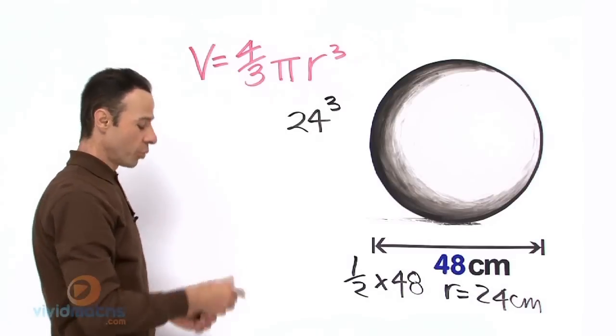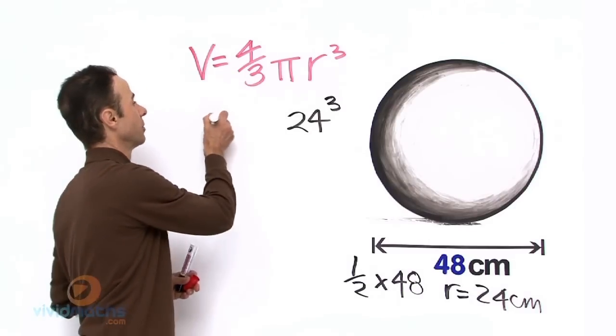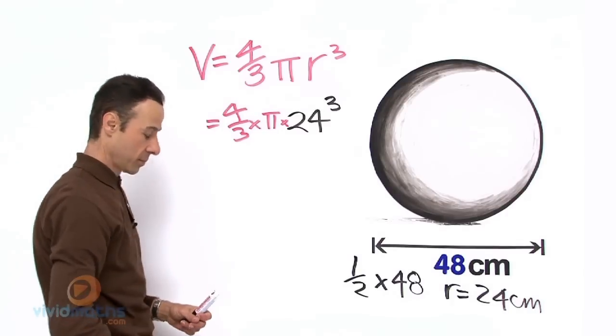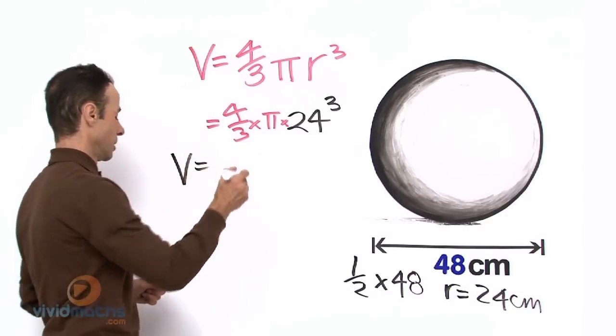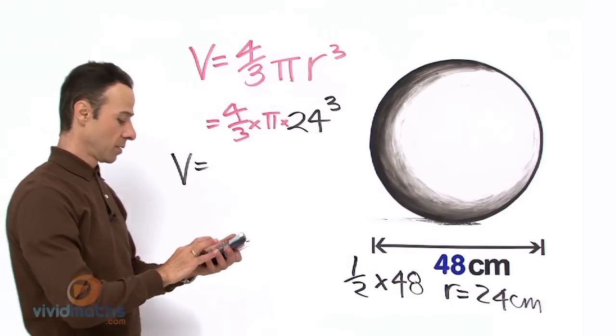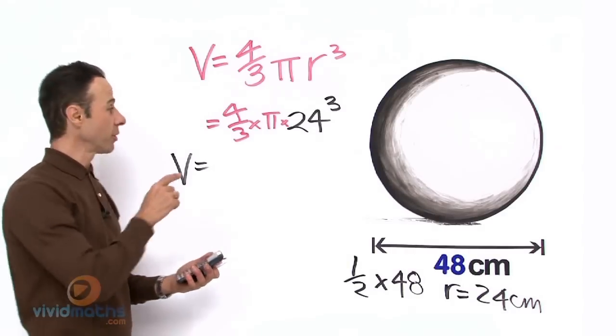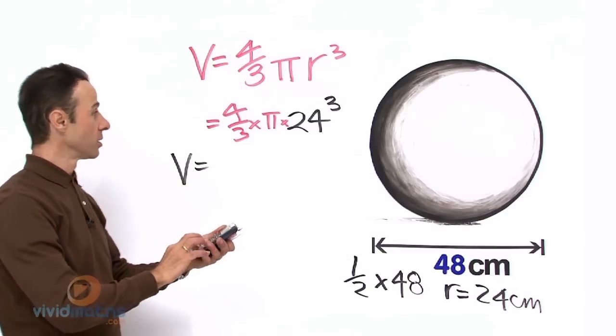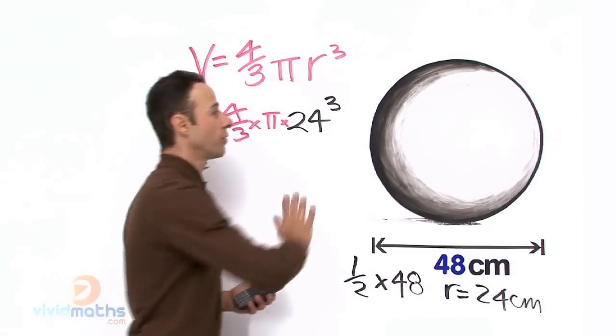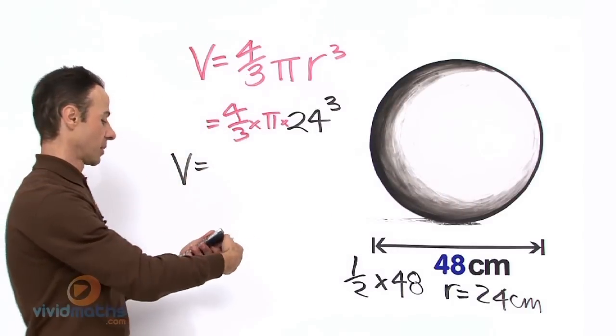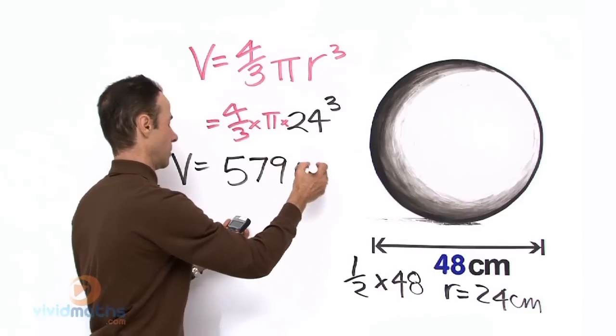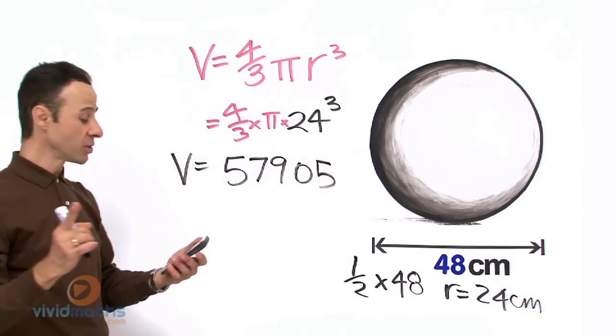What other values do we have here? We have the 4/3 and the π. So the volume for this sphere as we put it into our calculator is going to be 4/3 times π times 24 cubed, all in one hit. The total volume and content within that sphere is... 1 decimal place, we are going to round it.